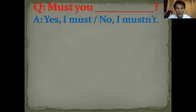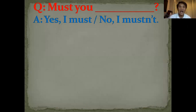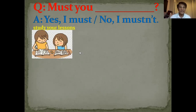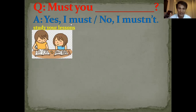So if I'm going to ask you, 'Must you...?' your answer will be 'Yes, I must' or 'No, I mustn't.' Again: yes, I must — or no, I mustn't. If you must do it, yes, I must. If not, no, I mustn't.